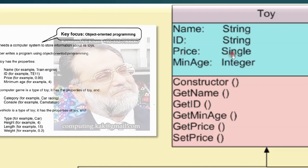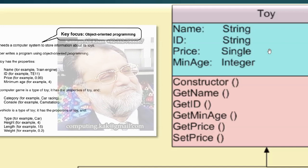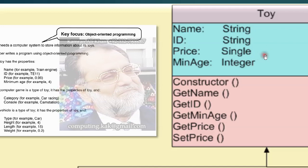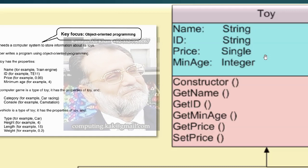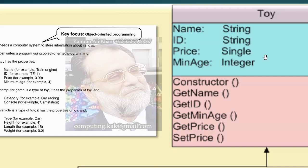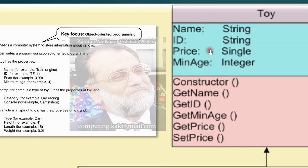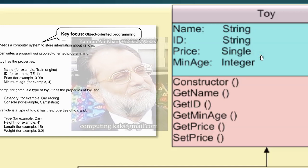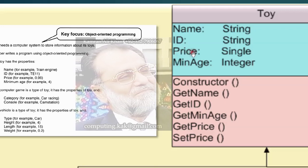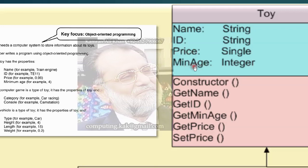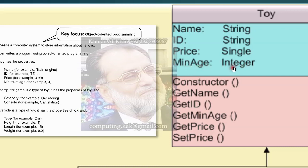Price is Single — Single means the floating point or decimal data type. You can also use Visual Basic's predefined data type called Currency, but it's usually hard to handle. Since the question does not say explicitly about Currency or any other data type, it is better to use Single, which can take a floating point or decimal number. Minimum age is called minAge and that will be Integer.